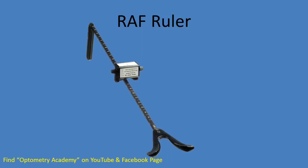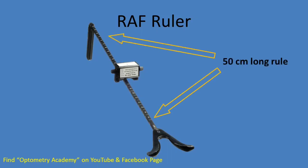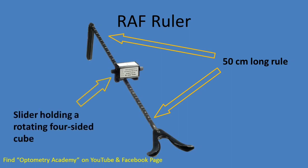The RF ruler consists of a 50 cm long rule with a slider holding a rotating four-sided cube. Each side has a different target. The first has a vertical line with a central rod for convergence fixation; the others provide a limited number of lines of near reading examples. One side features a diameter measurement from 22 to 1, one side is a ruler from 5 to 50 centimeters, one side tests 8 through 48, and one side tests for convergence: normal, reduced, and defective.